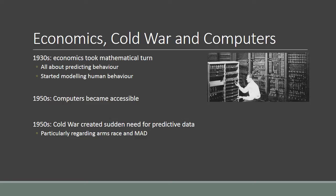For the field of international relations, this combination between behavioral models and computer power became particularly important in the context of the Cold War. The Cold War was a conflict in which there was very little knowledge of what was going on on the other side. Policy makers in the United States had very little insight into what was actually going on in the Kremlin. In order to get a grip on the nuclear arms race and the potential for mutually assured destruction, there was a huge demand for predictions on how the Soviets would respond to certain moves — and this was exactly what economic modeling plus computing power were able to do through game theory.